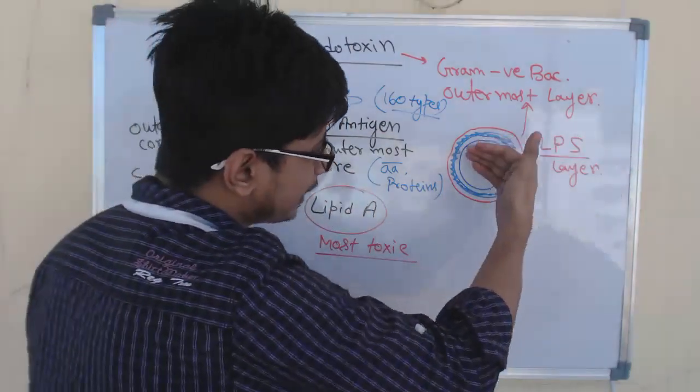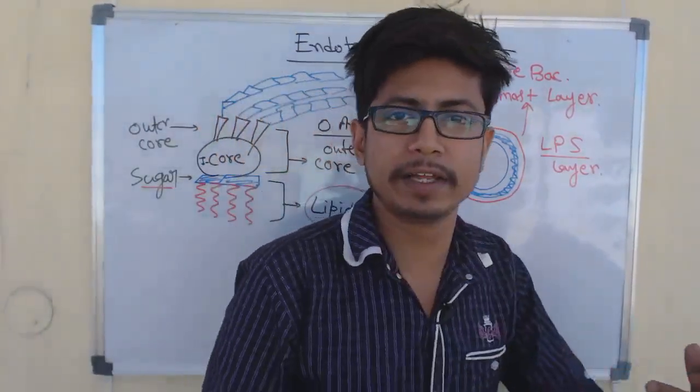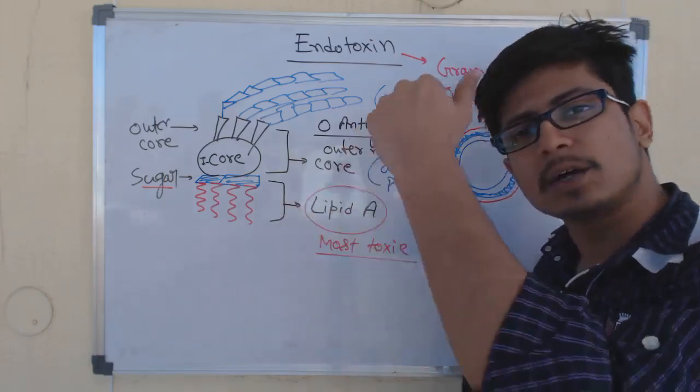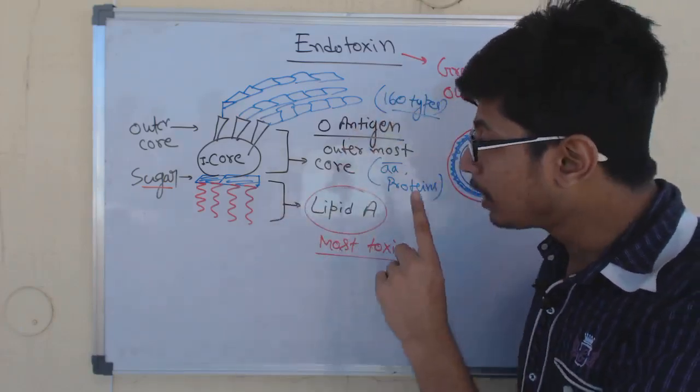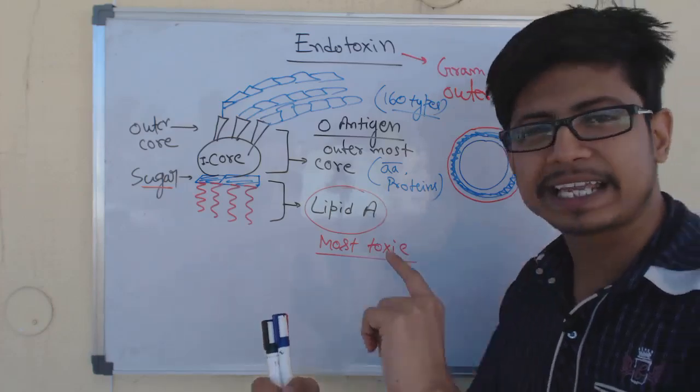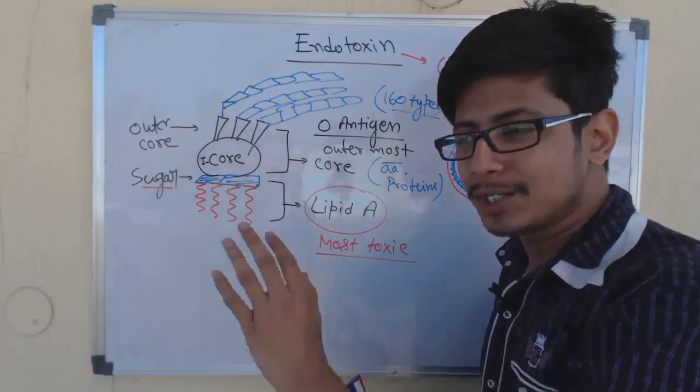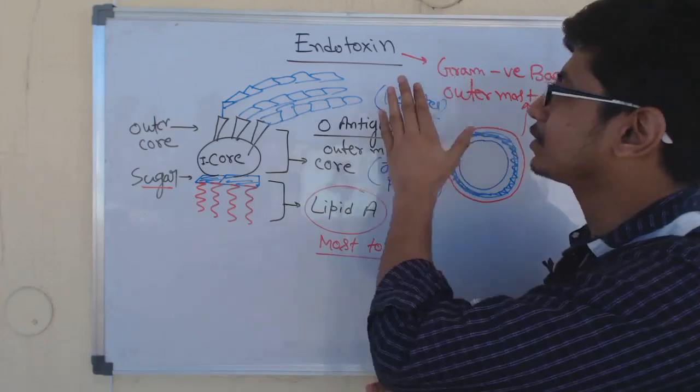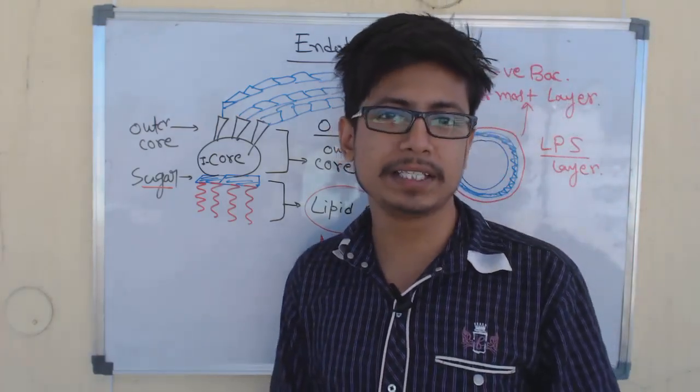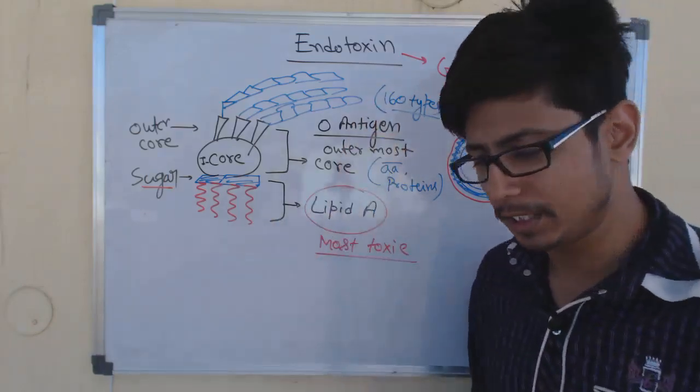Now the question is, this lipid A is embedded inside, so how could it come out? Until it is exposed to our body we don't have any infection. The answer is, normally once the bacteria is living, lipid A is embedded—it's not coming out. Only this lipid A portion can come outside if the bacteria is dead. If the bacteria gets killed or dies, then only lipid A can be exposed to our body and then our body can react. So the toxicity of the endotoxin can only be found when the bacteria is dead. Living bacteria cannot give us any kind of toxicity with the endotoxin. All these things happen after the bacteria has died.